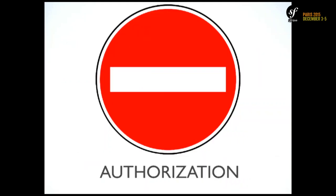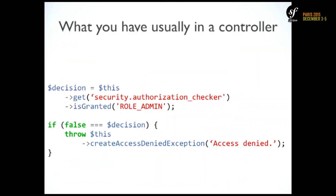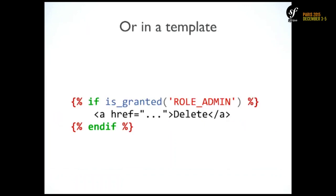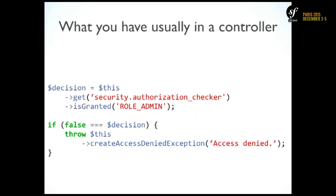Authorization. Most of the time when you do authorization, it looks like this: you are in your controller, you call isGranted with a string representing a role or permission, and if it's not okay, you trigger an exception. You can also use denyAccessUnlessGranted. In your templates it looks similar, and in your service you inject the security authorization checker.